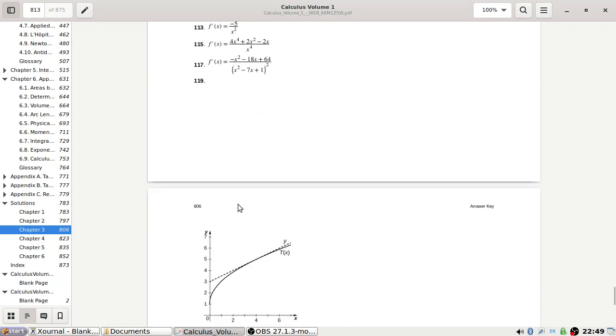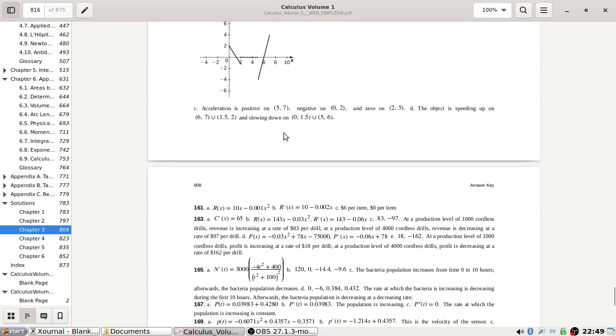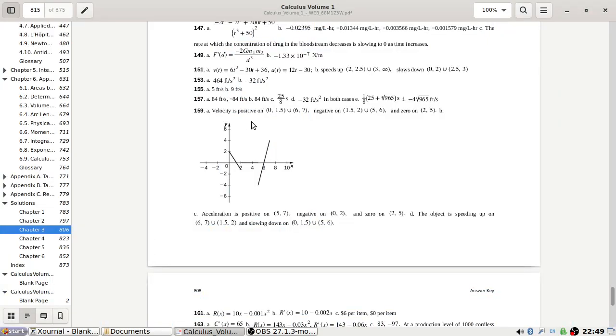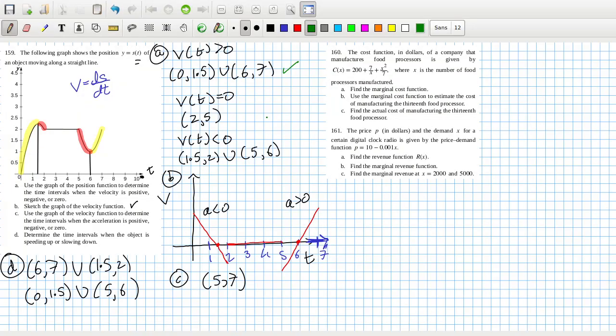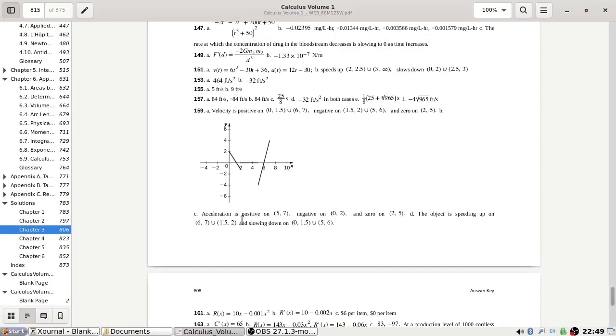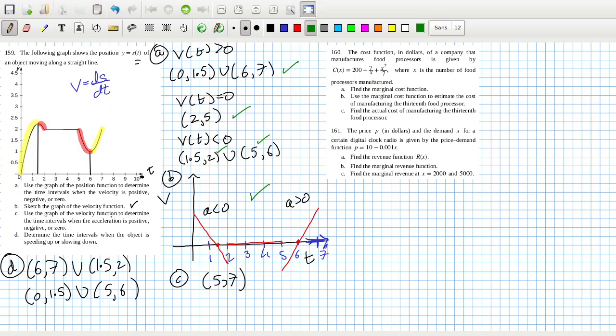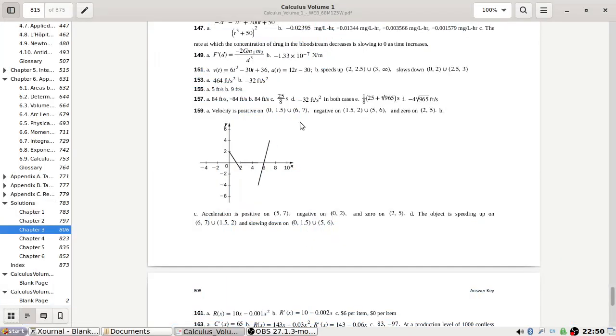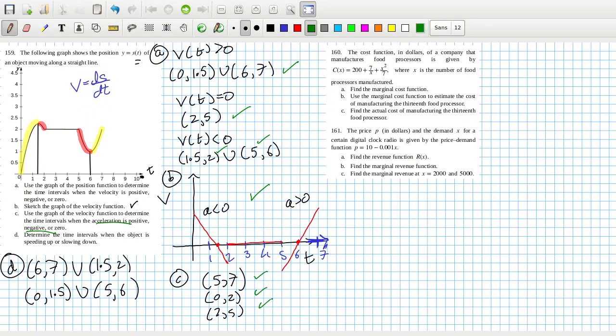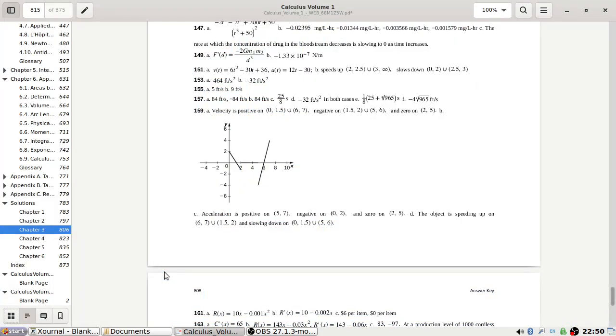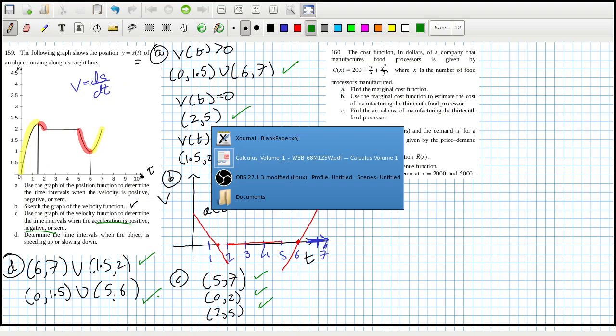Let's check the answer. 159, 159. 167. And then negative: 1.5 to 2 and 5 to 6, and 2 and 5. And the graph looks okay. And C is - oh, did I miss the other ones? Acceleration: acceleration is positive, and I missed negative and zero. So negative would be 0 to 2, and zero is 2 to 5. Let's check that. 5, 7, 0, 2, 2, 2, 5. And then lastly, 6, 7, 1.5, 2, and 0, 1.5, and 5 to 6. Okay, looks okay.